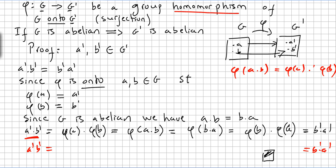So we have proved: if G is abelian, G prime must be abelian. We picked arbitrary a' and b' in G prime and showed a' ·' b' = b' ·' a', which is exactly what we needed to prove.